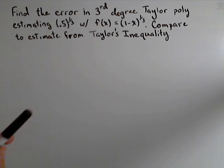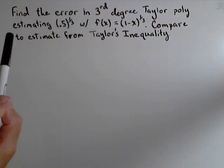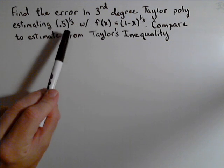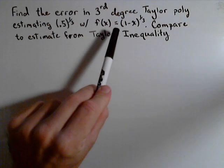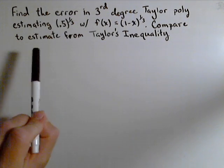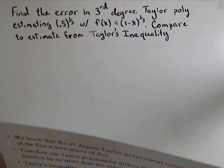In this problem, we're going to look at finding the error in a third degree Taylor polynomial for estimating 0.5 to the one-third using the function one minus x to the one-third, and we're going to compare it to the estimate from Taylor's inequality.